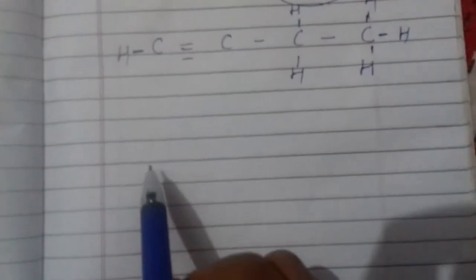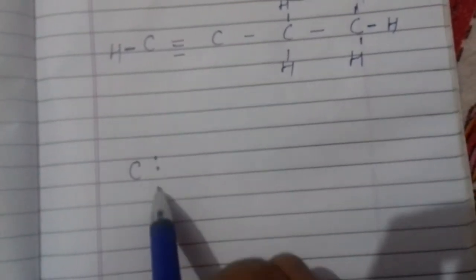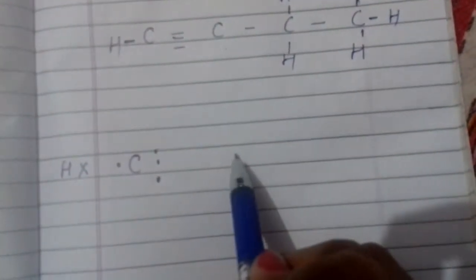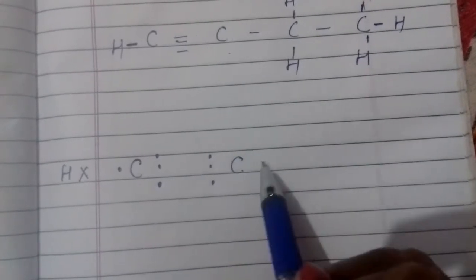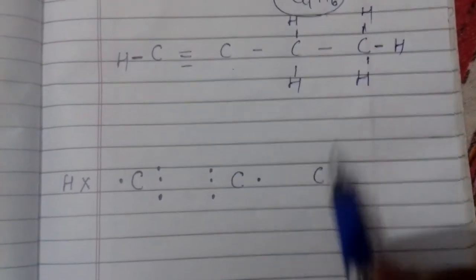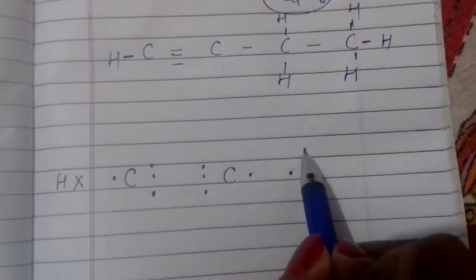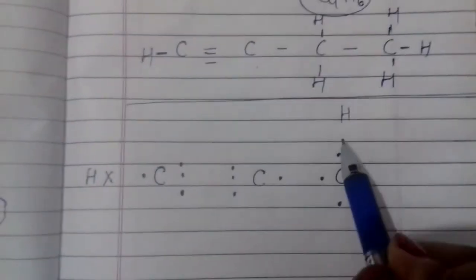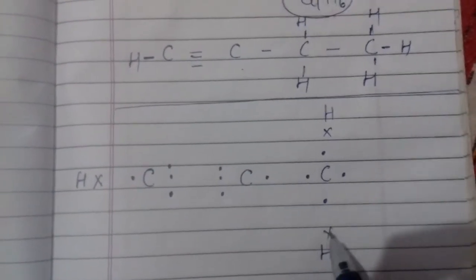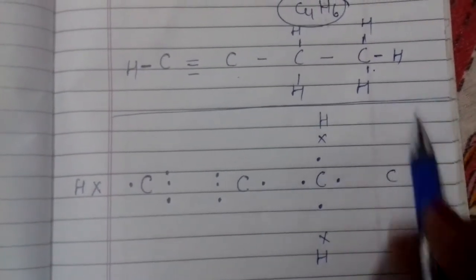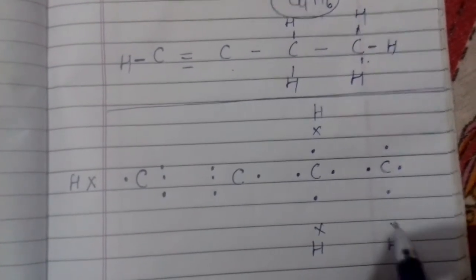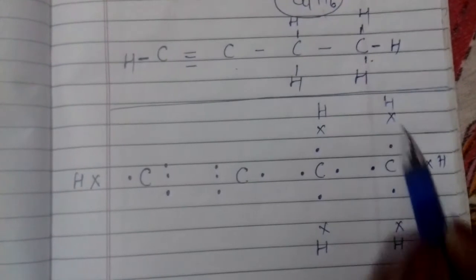अब इसकी electron dot structure बना लेते हैं। जहाँ carbon है वहाँ carbon लिखिए, जितने bond हैं उतने ही dot show कर दीजिए। पहले carbon के आगे 3 bond हैं तो 3 dot, पीछे 1 bond है तो 1 dot, और hydrogen है तो उसका cross show कर देंगे। Second carbon के पीछे 3 bond हैं तो 3 dot, आगे 1 bond है तो 1 dot। Third carbon में चारों तरफ bond है, तो चारों तरफ 1-1 electron show करेंगे, और hydrogen का cross show करेंगे। Fourth carbon 3 side hydrogen से जुड़ा है और 1 side carbon से, तो carbon से 1 dot और hydrogen के crosses show कर देंगे।